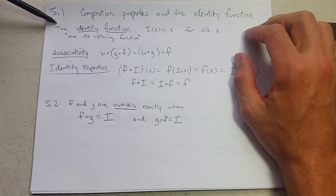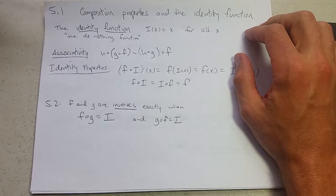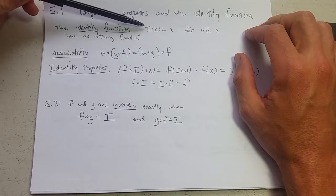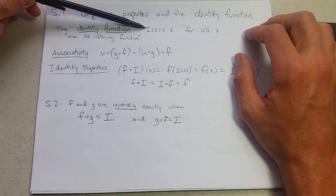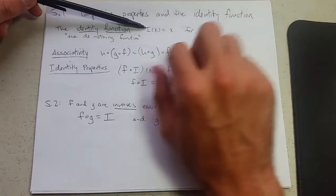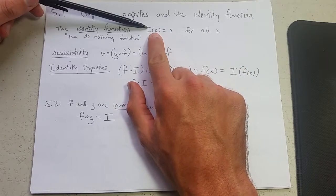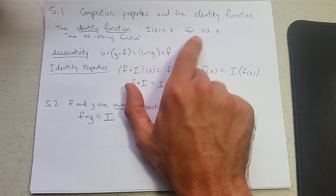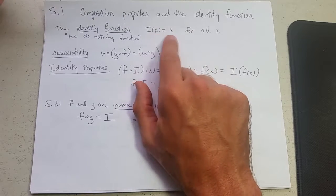What is the identity function? I like to think of it as a do-nothing function. It does nothing. We use capital I for the identity as the name of the function, and the identity function when it eats x, the output is x for all x. It's not very exciting.